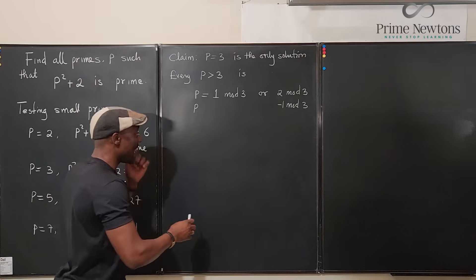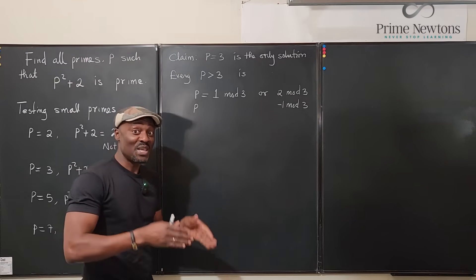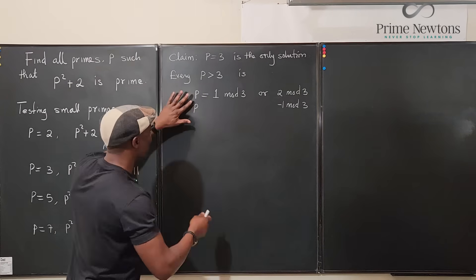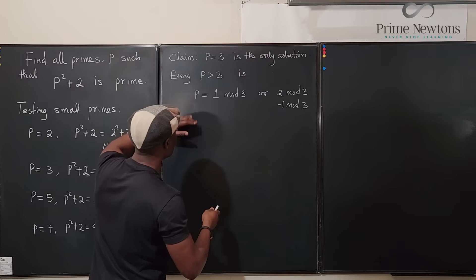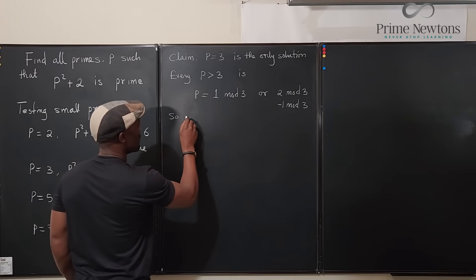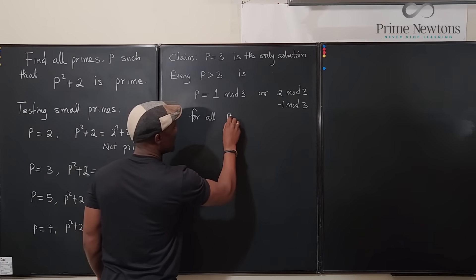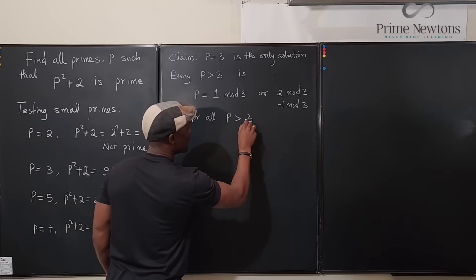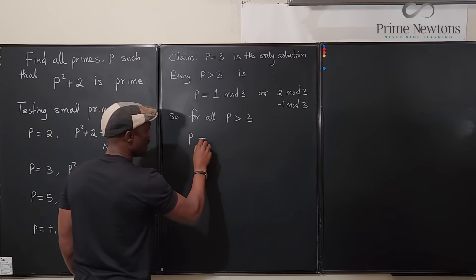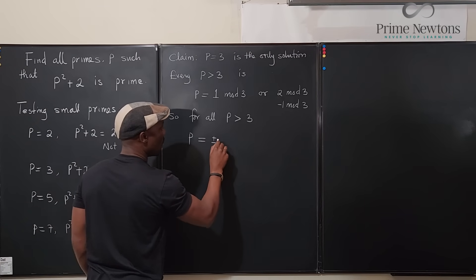So we can say that generally, if p is greater than 3, so for all p greater than 3, p is equal to plus or minus 1 mod 3. And this is it.